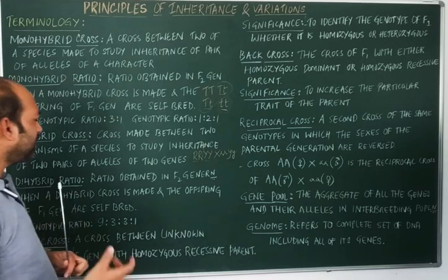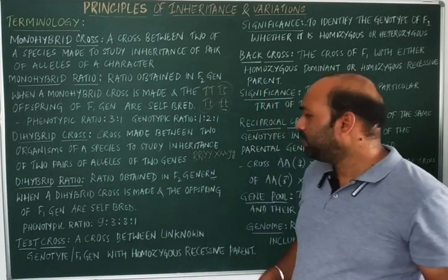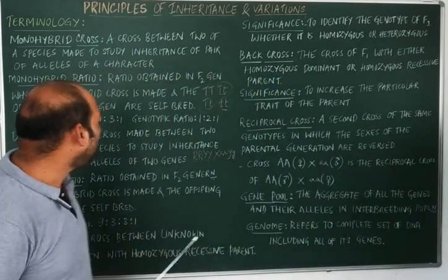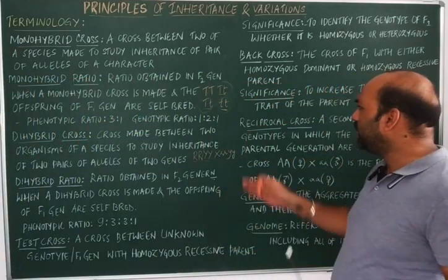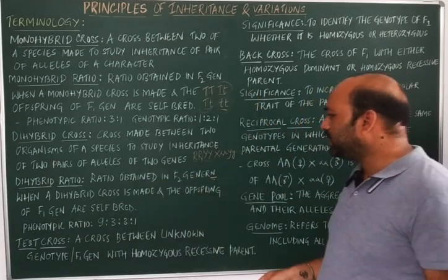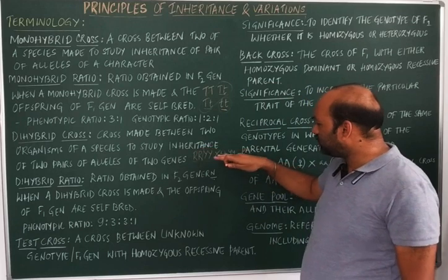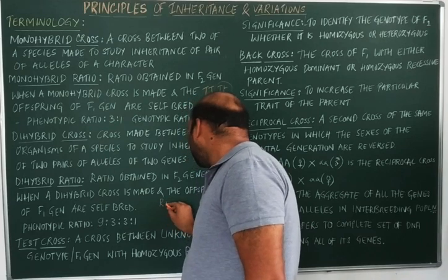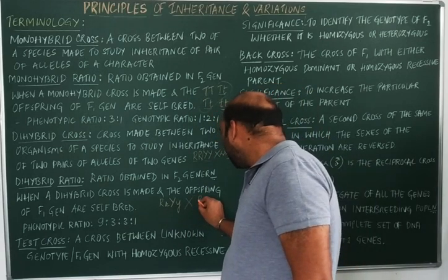Next is dihybrid ratio. This is the ratio obtained in the F2 generation when a dihybrid cross is made and the offspring of the F1 generation are self-bred — similar to the monohybrid ratio. For example, crossing round yellow seeds with wrinkled green seeds gives the F1 generation RrYy, and selfing is then performed.